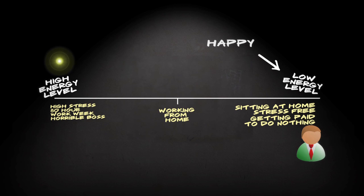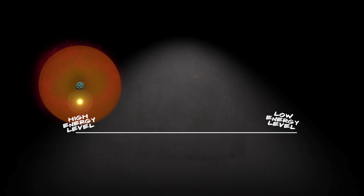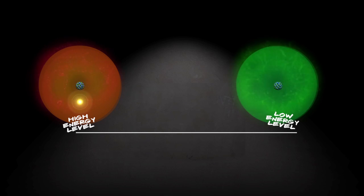For electrons, buzzing around some atoms is like working in a high stress environment, and buzzing around others is like sitting at home and getting paid for nothing. A battery basically gives electrons a path to a happy stress free life, but makes them work for it.